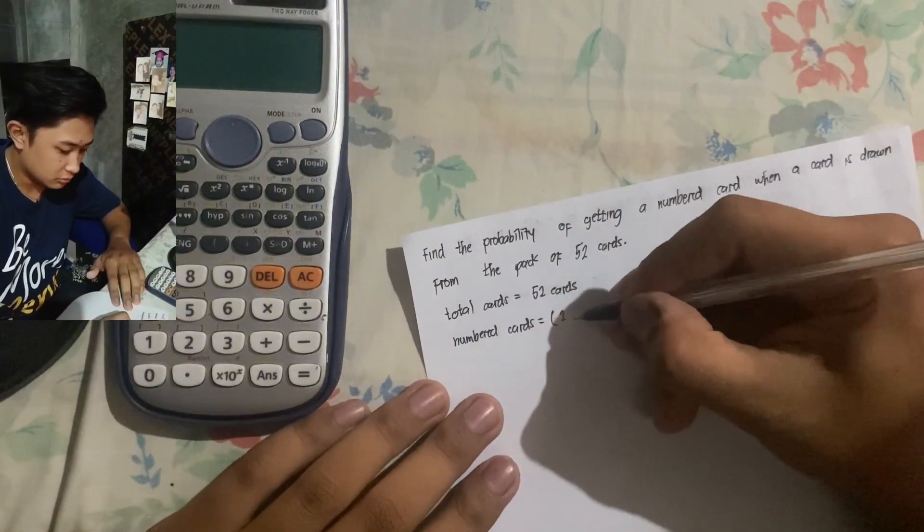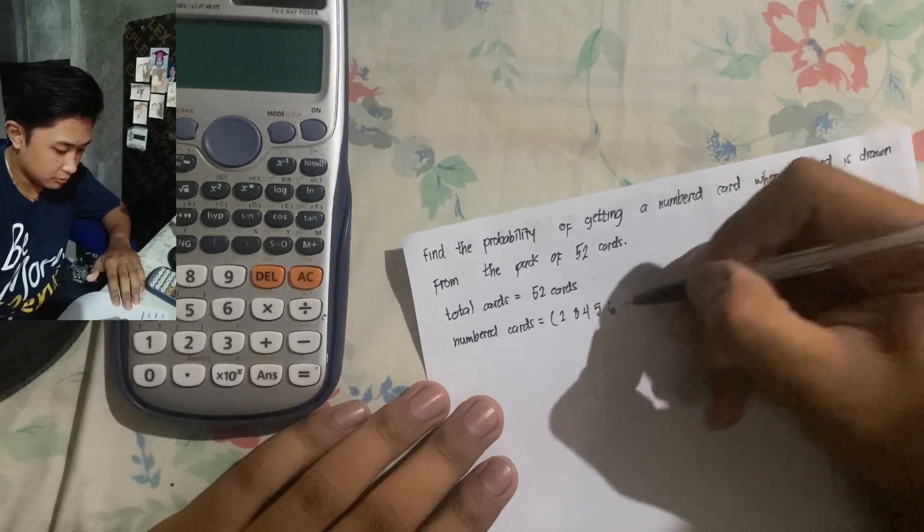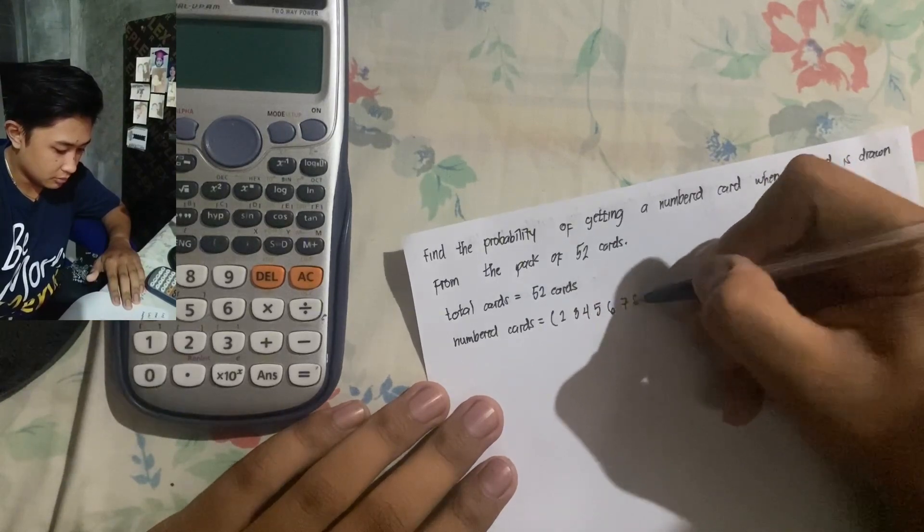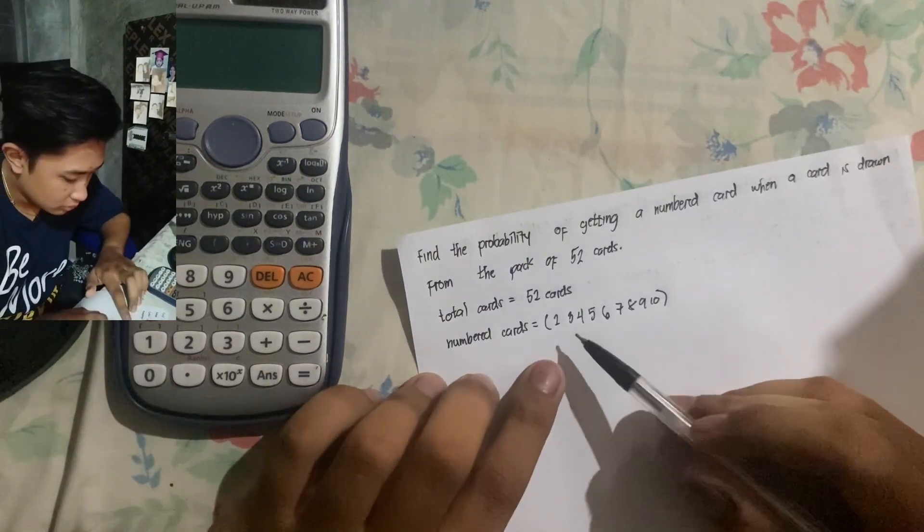Is 2, 3, 4, 5, 6, 7, 8, 9, 10. That's 1, 2, 3, 4, 5, 6, 7, 8, 9 cards.